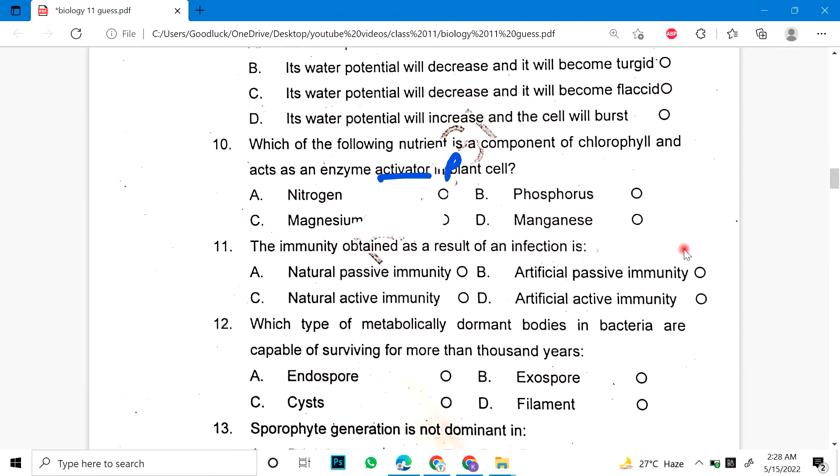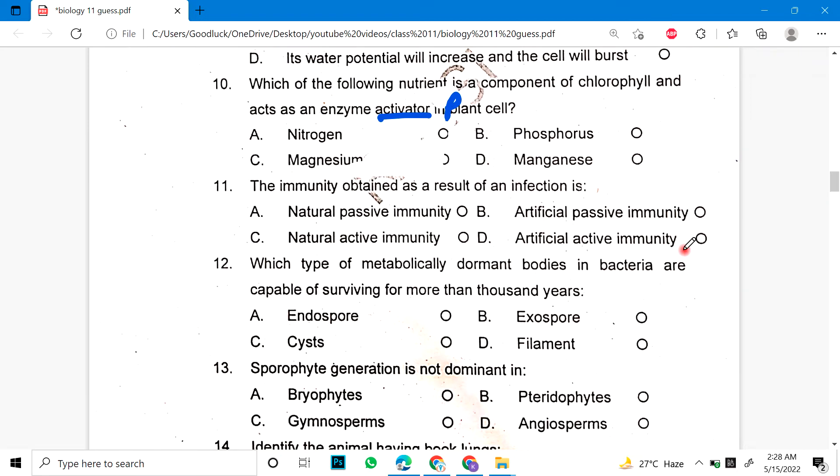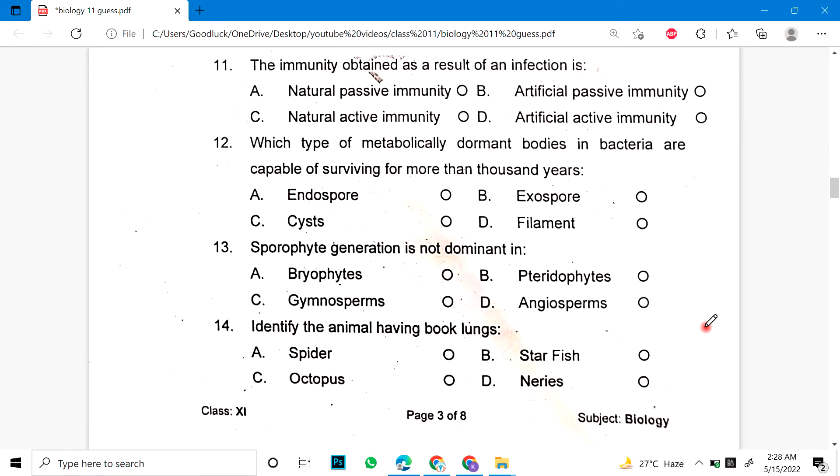Number 11: The immunity obtained as a result of an infection is A, B, C, D. Number 12: Which type of metabolically dormant bodies in bacteria are capable of surviving for more than 1000 years? Number 13: Which type of sporophyte generation is not dominant in?